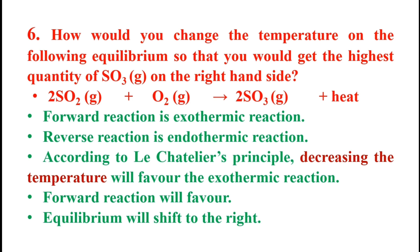According to Le Chatelier's principle, decreasing the temperature will favor the exothermic forward reaction. This means decreasing the temperature will shift the equilibrium to the right, increasing the yield of SO3.